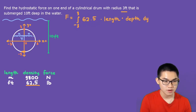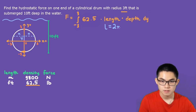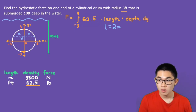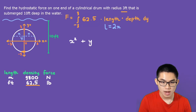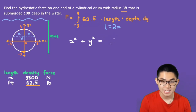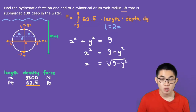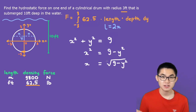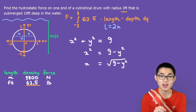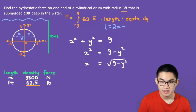The length of the stripe is 2x, but we need to convert x into y because the formula requires everything in terms of y. The formula for a circle is x² + y² = r², and since the radius is 3, we get x² + y² = 9. Solving for x: x² = 9 − y², so x = √(9 − y²). We only take the positive root since length must be positive, giving a stripe length of 2√(9 − y²).